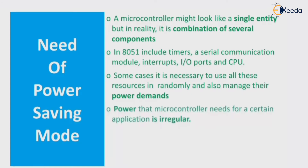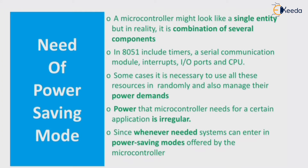The power that a controller needs for a certain application is in an irregular manner. In that case, the microcontroller needs to stop the power consumption for the serial part only, and provide the whole power to the CPU. Whenever power is needed, the system can enter a power saving mode, and this is offered by the microcontroller.